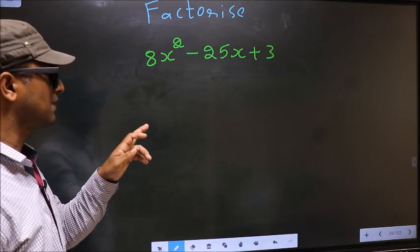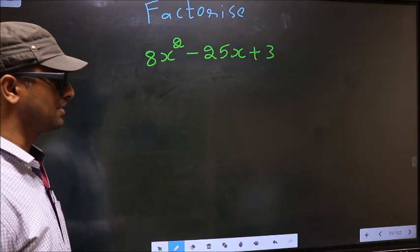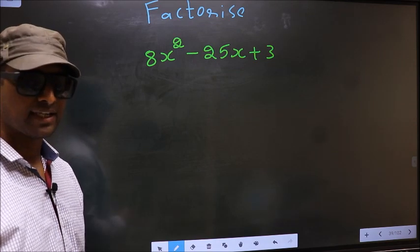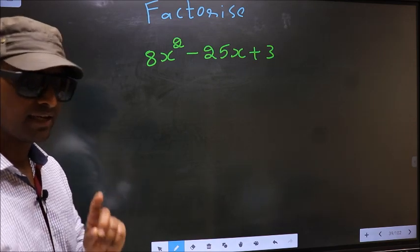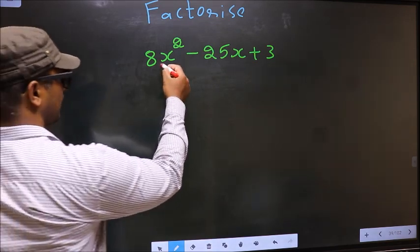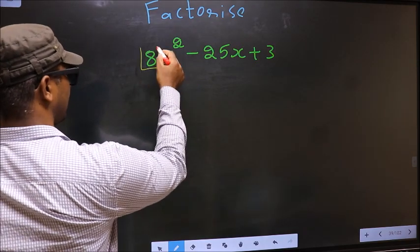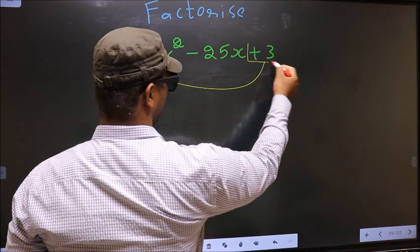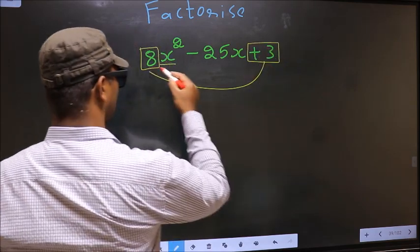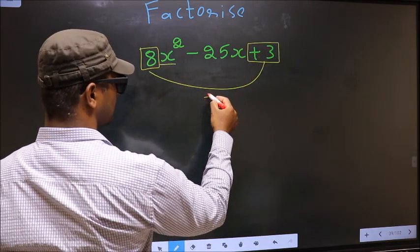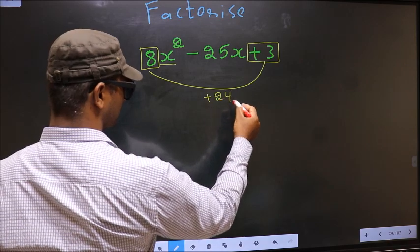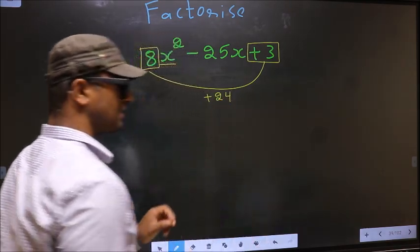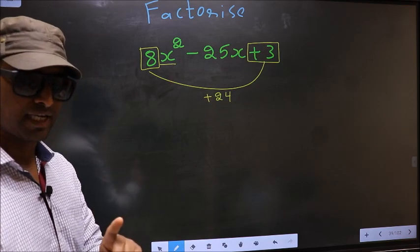Factorize 8x square minus 25x plus 3. To factorize, step 1: the coefficient of x square, that is 8 here, should be multiplied to the constant, that is plus 3. So 8 into plus 3 is plus 24. This is your step 1.